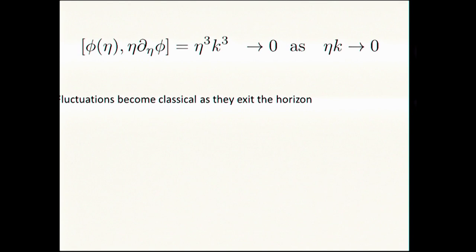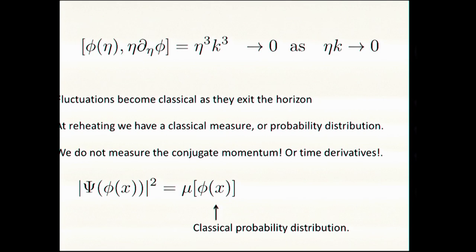You can see this very explicitly by computing the commutation relations between the amplitude of the wave for each particular mode and its proper time derivative. It suddenly goes to zero as the mode becomes bigger. The physical wavelength becomes bigger than the Hubble scale during inflation.